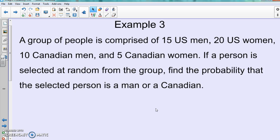A group of people is comprised of 15 US men, 20 US women, 10 Canadian men, and 5 Canadian women. If a person is selected at random from the group, find the probability that the selected person is a man or a Canadian.